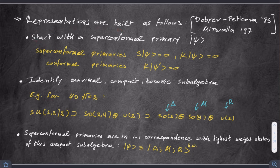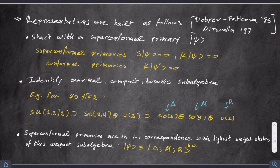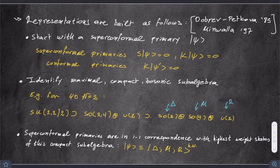Start the whole discussion with a superconformal primary, denoted abstractly by state psi. Superconformal primaries, by definition, are annihilated in an appropriate basis by all the superconformal supercharges S. And because they are also conformal primaries, they get annihilated by K, the special conformal transformations. The definition of the conformal primary is one where K kills it.